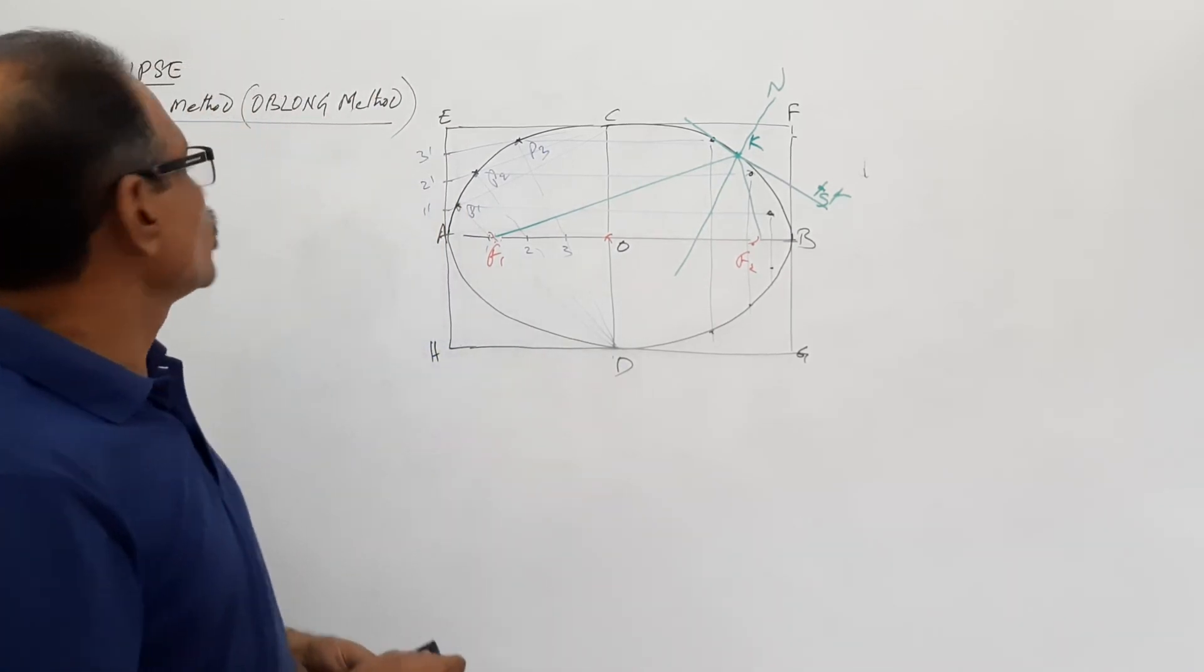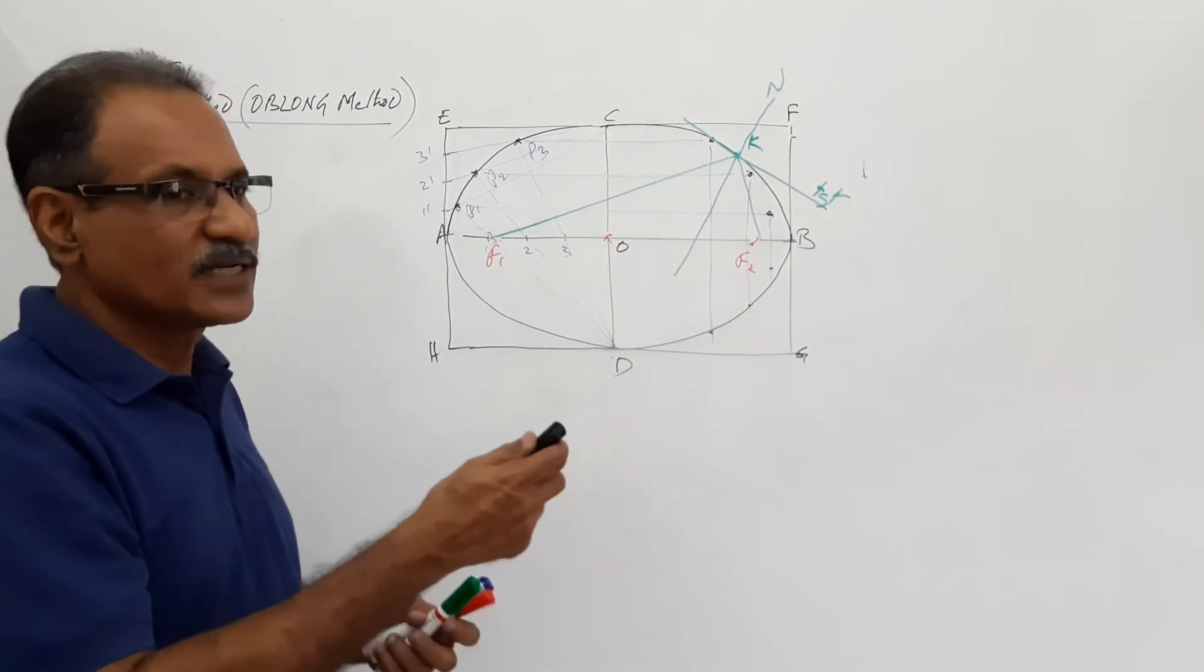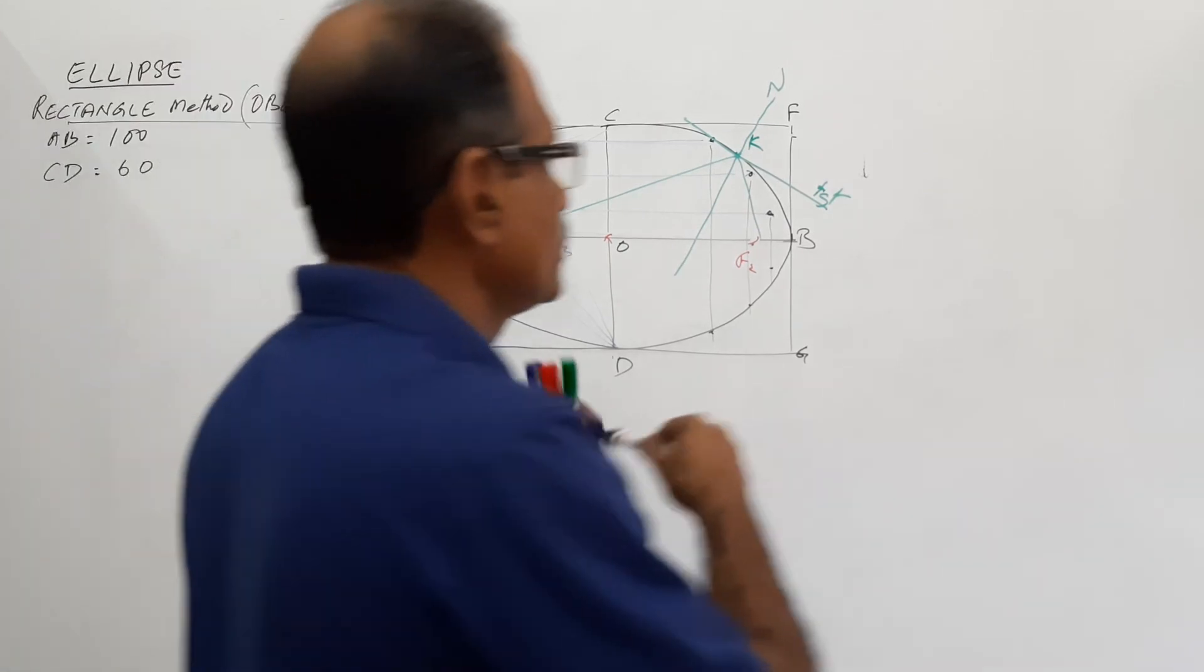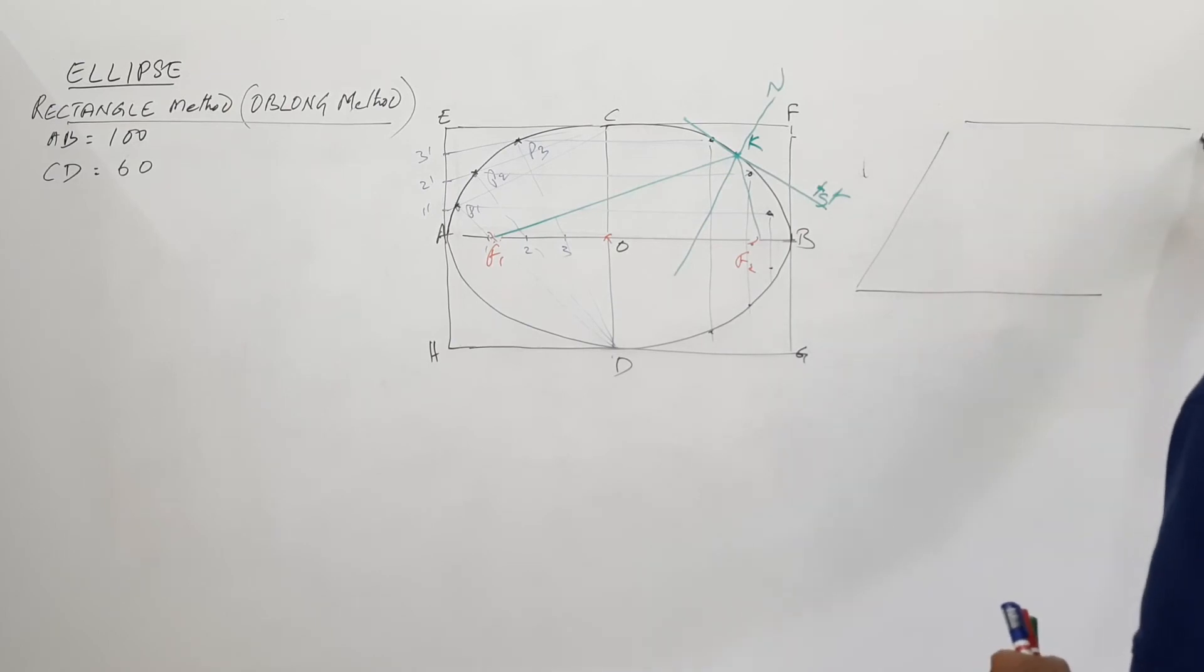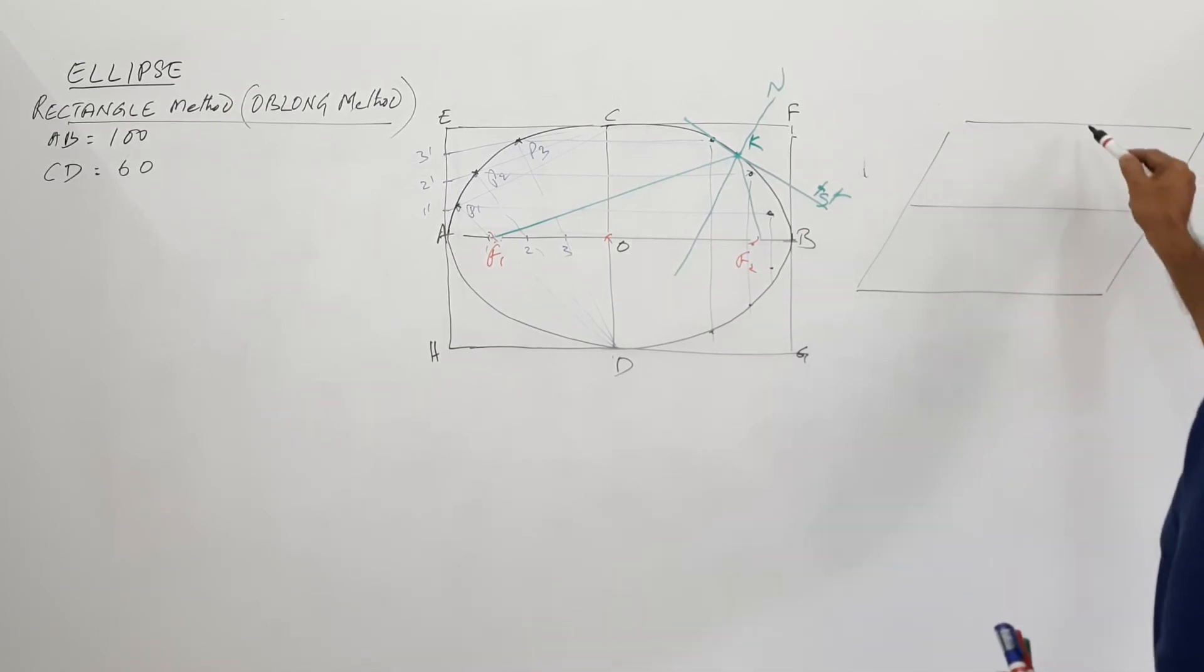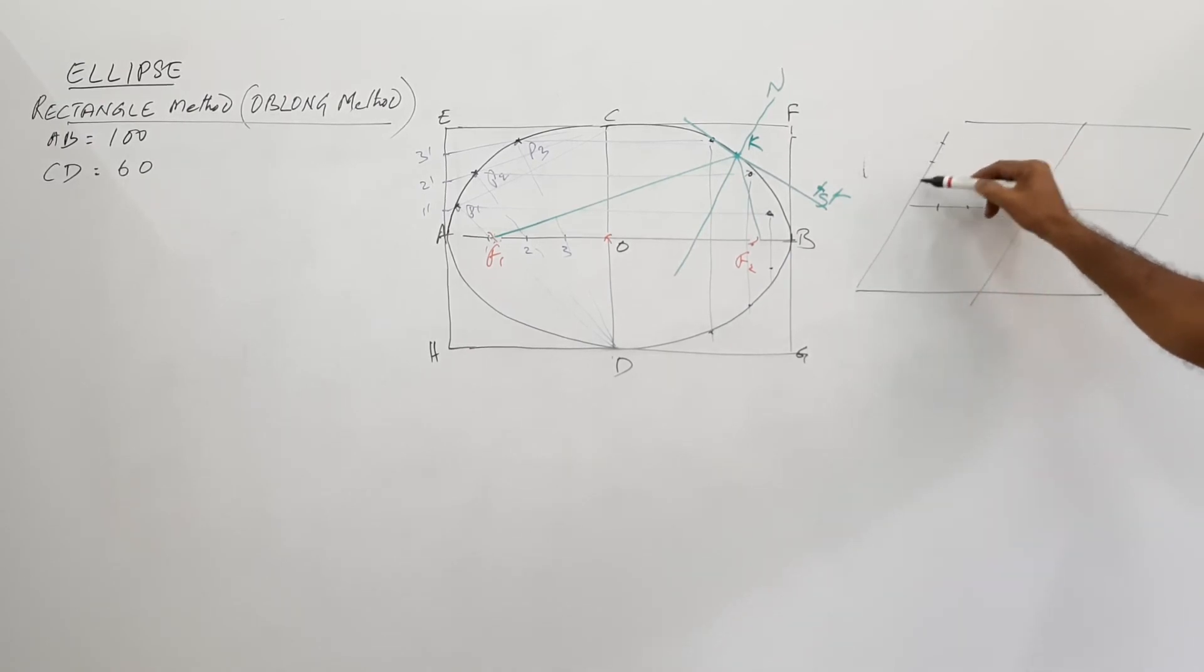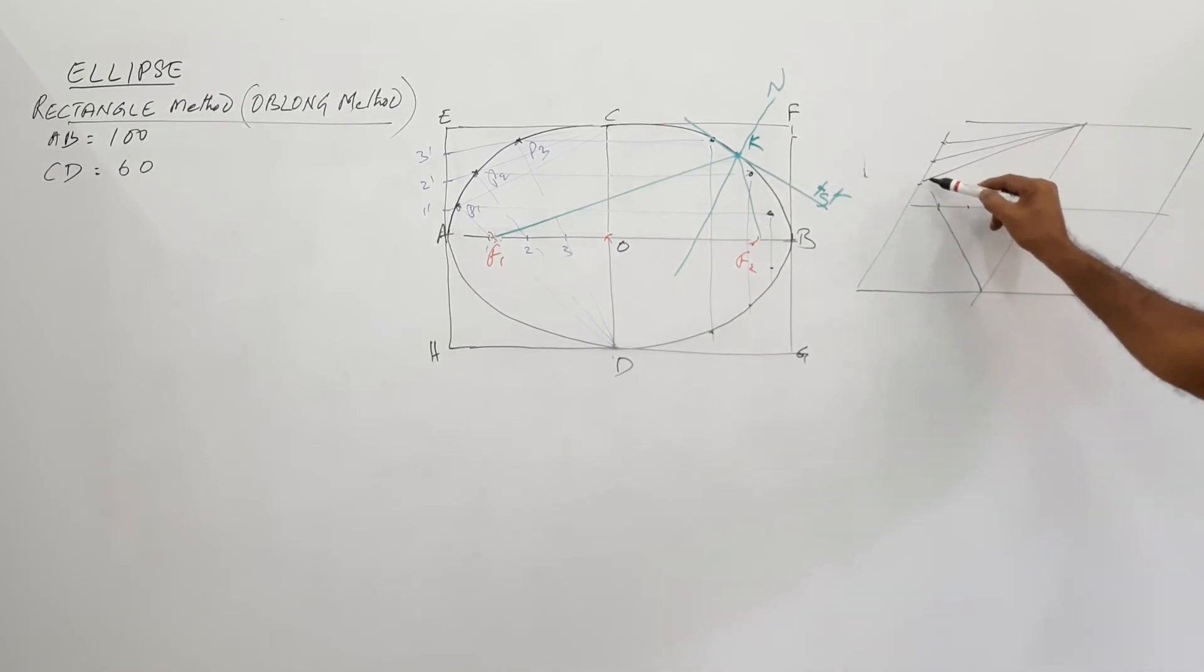This method is also called a block method. Now you can construct the same thing in a parallelogram instead of a rectangle. If you construct a parallelogram, the same method is used. You divide this into four equal parts, you divide this into four equal parts, join them.